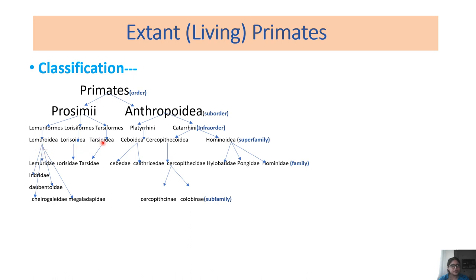The Lemuroidea superfamily has five families: Lemuridae, Indriidae, Daubentoniidae, Cheirogaleidae, and Megaladapidae. Lorisoidea has one family, Lorisidae, and Tarsioidea has Tarsiidae. In this video we will discuss about these living prosimians, and in the next class we will discuss about living anthropoids.